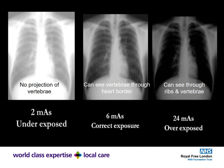On an underexposed film, you effectively have a blob in the middle with lots of white — the scapulae are not distinguishable and no vertebrae are projected; no clinically useful information can be obtained. The correct exposure in the middle image shows the vertebrae through the heart border — exactly what you want. An overexposed film on the right shows the ribs and vertebrae through the lungs with obliterated heart borders, again providing no diagnostically useful information.